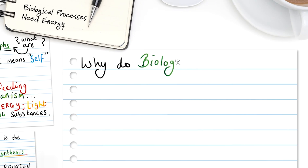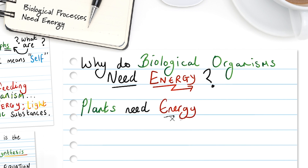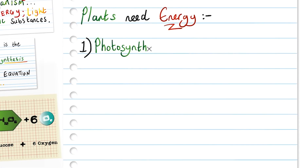Why do biological organisms need energy? When learning A-level biology, you could be asked why you need to know about photosynthesis and cellular respiration, and therefore why organisms and biological processes need energy. It is important that you can list a few key examples. Plants need energy. Number one: photosynthesis.